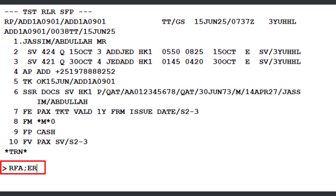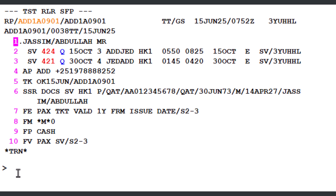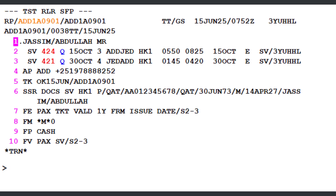Let's save the changes. Then refresh the PNR — type IR and press Enter. Great. Your PNR is built, fares are quoted, and you're ready to issue the ticket.